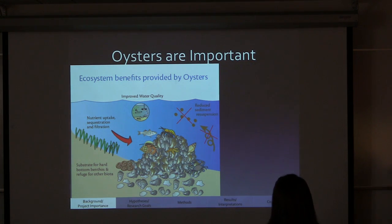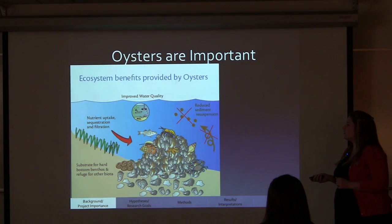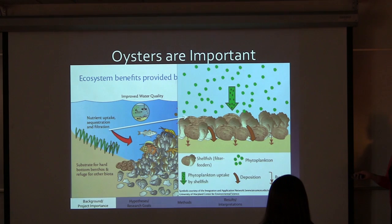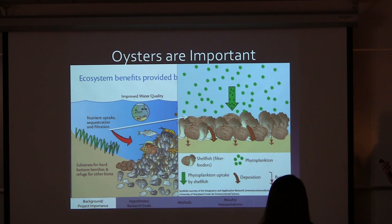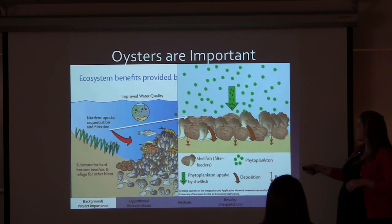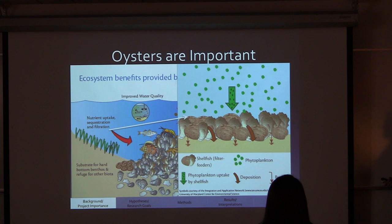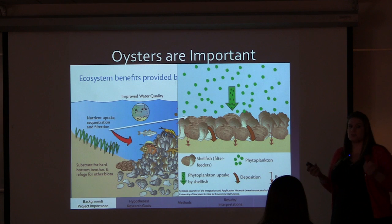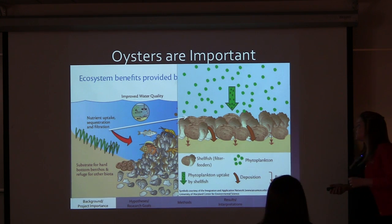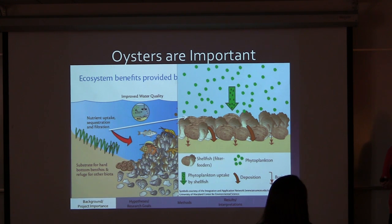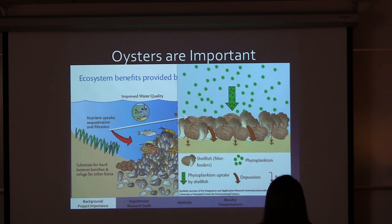The first thing I want to talk about is why oysters are important and why we should care about them. Oysters are really important because they are filter feeders. They take in phytoplankton, remove it from the water, and eventually deposit their waste into the soil. This clears the water and allows more sunlight to come through, which is helpful for marine plants to be successful. These marine plants are very important nursery locations for a lot of marine animals.